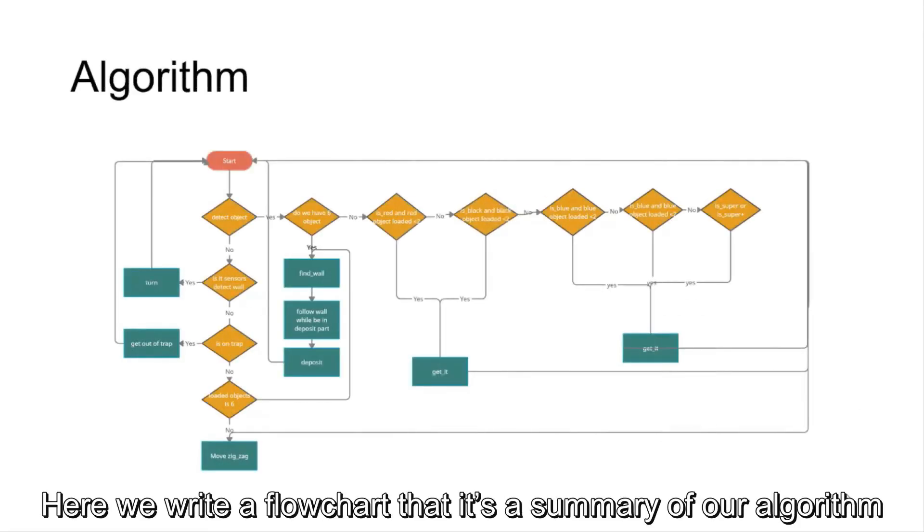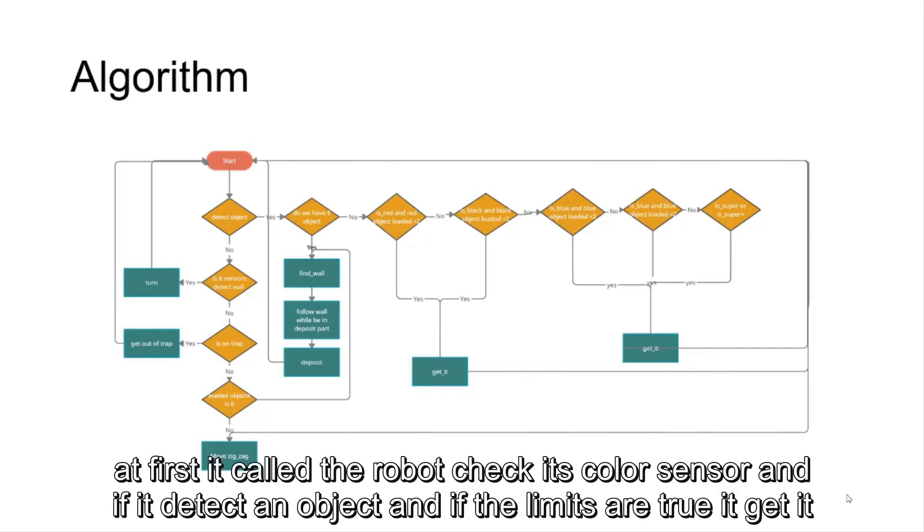And now I want to explain our algorithm for you. Here I write a flowchart that says it's a summary of our algorithm. At first, the robot checks its color sensor, and if it detects an object, if the limits are true, it gets it.